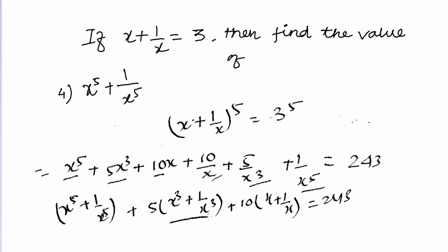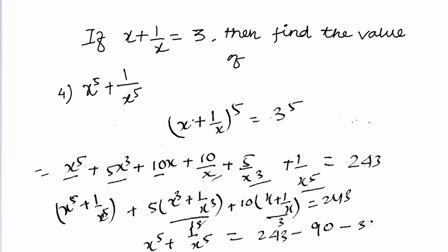We have already determined x cube plus 1 by x cube equals 18, and x plus 1 by x is given as 3. So 5 × 18 = 90 and 10 × 3 = 30. Therefore x to the power 5 plus 1 by x to the power 5 equals 243 minus 90 minus 30, which is 123.